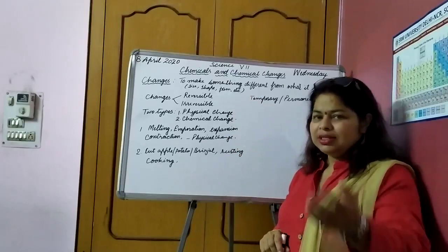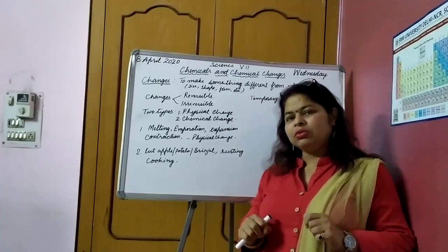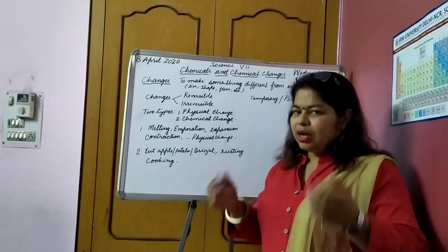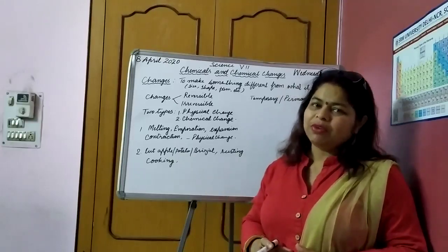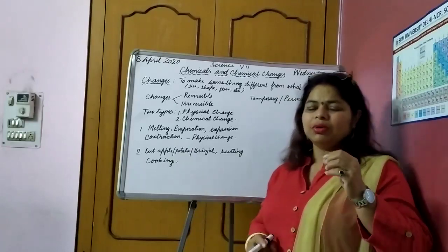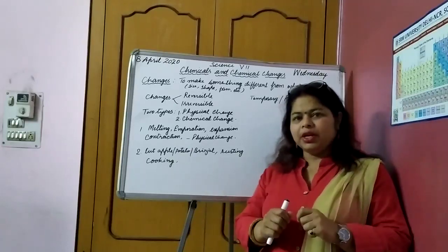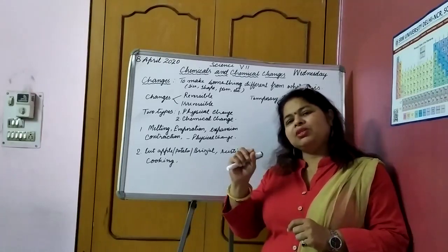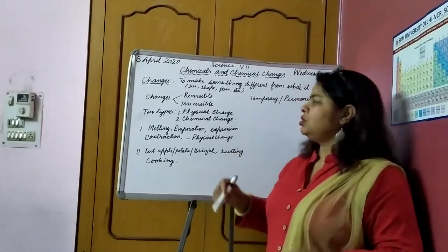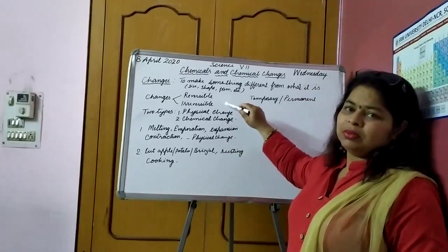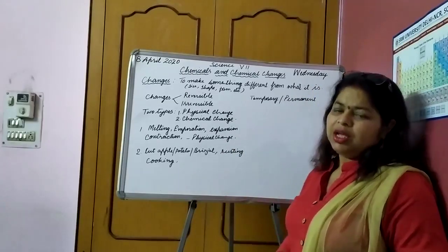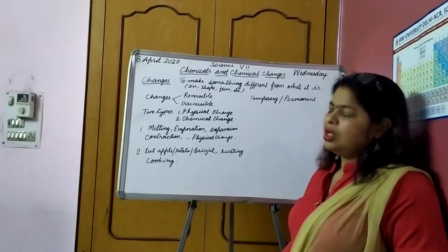Such type of changes that cannot be reversed are called irreversible changes. Like toys — they break down, the size and shape change. Can you make them the same way again? No. Glass is broken — you try to join it, but some pieces are so small it cannot be made the same way. So such changes are called irreversible changes.